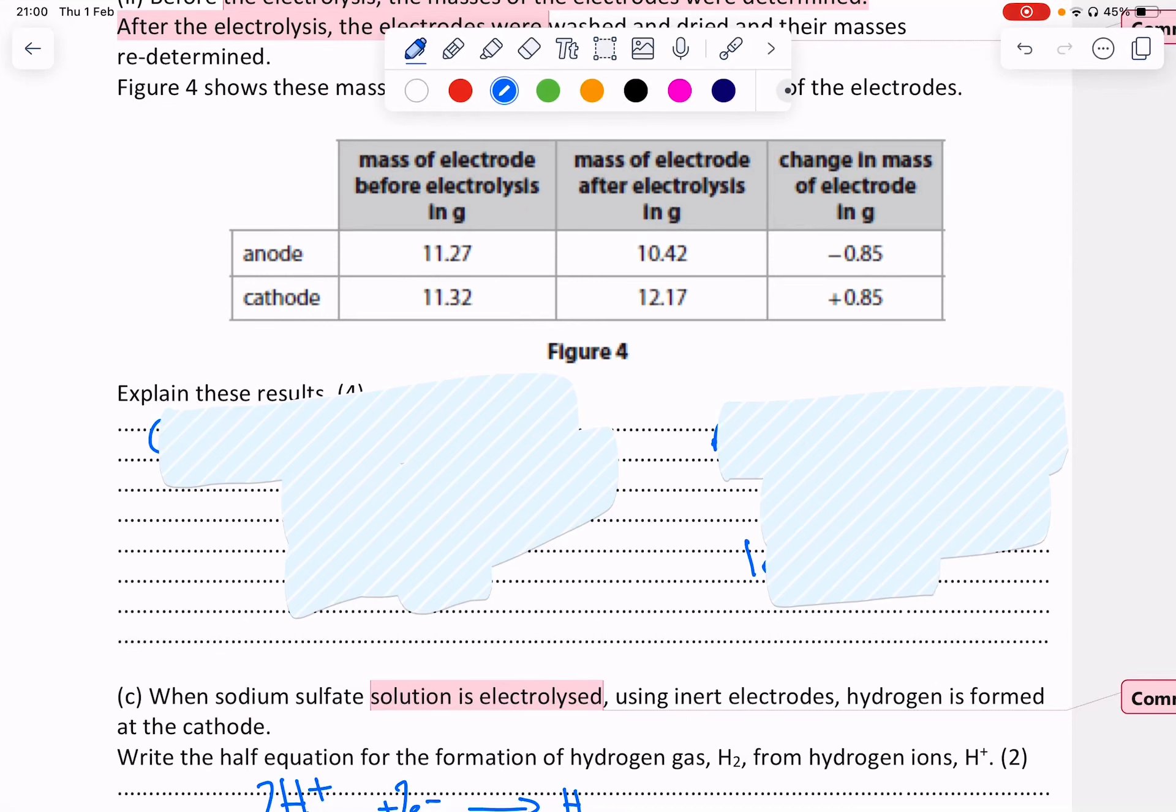Right here we've got the anode and it's going from 11.27 to 10.42, so this means it is losing mass.